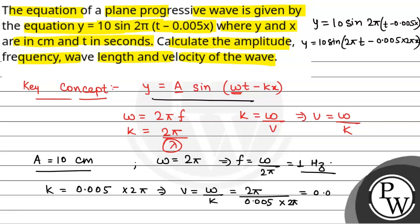v will be equal to 1/0.005 that is 200 cm per second. So we have velocity of wave.